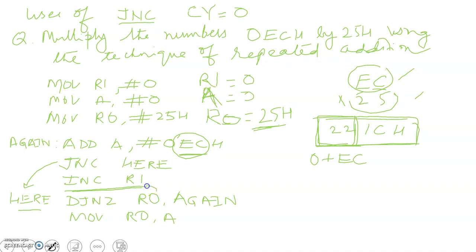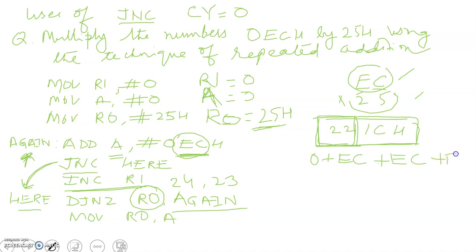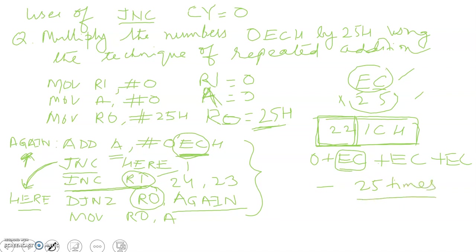The DJNZ instruction checks the status of R0: first it decrements R0 (from 25 to 24) and checks whether it is 0. It is not 0, so it moves back to 'again', where EC gets added to A again. This continues — each iteration, if no carry is generated it moves forward; if a carry is generated, R1 is incremented by 1. The loop continues until we have added EC a total of 25 times.